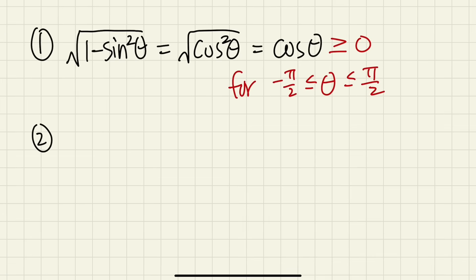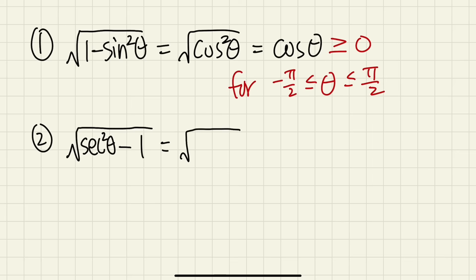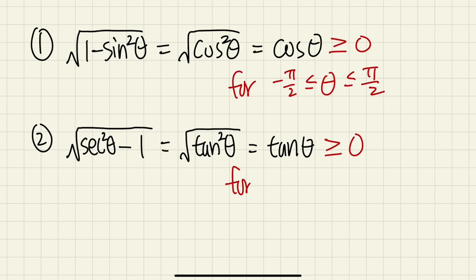Next, the secant substitution — that's the case when we have something like x squared minus 1. We use secant squared theta. By the way, nobody really uses cosecant or cotangent substitutions because they have negative derivatives. That's why we stick with sine, secant, and tangent. For the inside of the square root we get tangent squared theta, and to get just tangent theta — to make it non-negative — we restrict theta to between 0 and pi over 2. Both tangent and secant are undefined when theta equals pi over 2, so there's no equal sign at that endpoint.